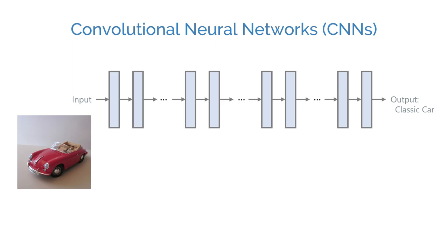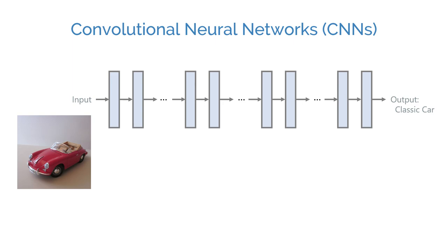The output of such a model can, for example, be a label that describes what's in the input image. Internal layers of CNNs can be considered as image filters with tunable parameters. Therefore, what a CNN does can be considered as some sort of adaptive image processing.